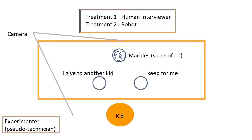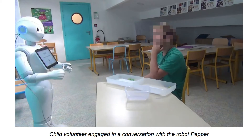For the dictator game, each child was given 10 marbles and asked how much he or she wanted to keep and how much to give to another person. We then tried to influence the decision with two successive nudges in random order: the peer effect and the first-person strategies. For the peer effect strategy, we told the child: 'You chose X number of marbles, but most children will have chosen Y number of marbles,' and observed the reaction. If the child changed his or her choice, the nudge was considered effective; otherwise, not. Here is a picture of the experiment with a robot interlocutor.